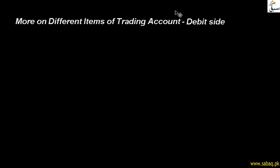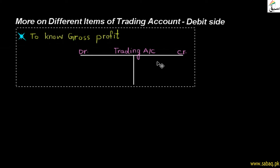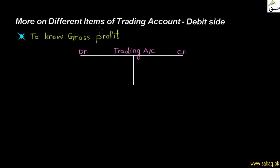Today we are going to read the items in the trading account. In our last video we have seen the different items that are written on the debit side of the trading account. Now let's see the other items on the debit side. The trading account is made to know gross profit. What is gross profit?